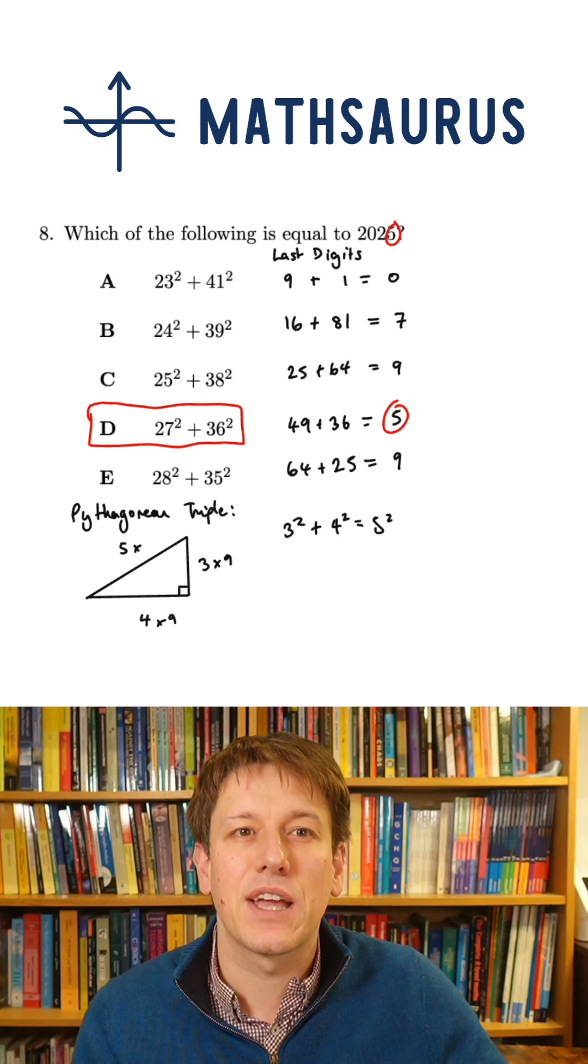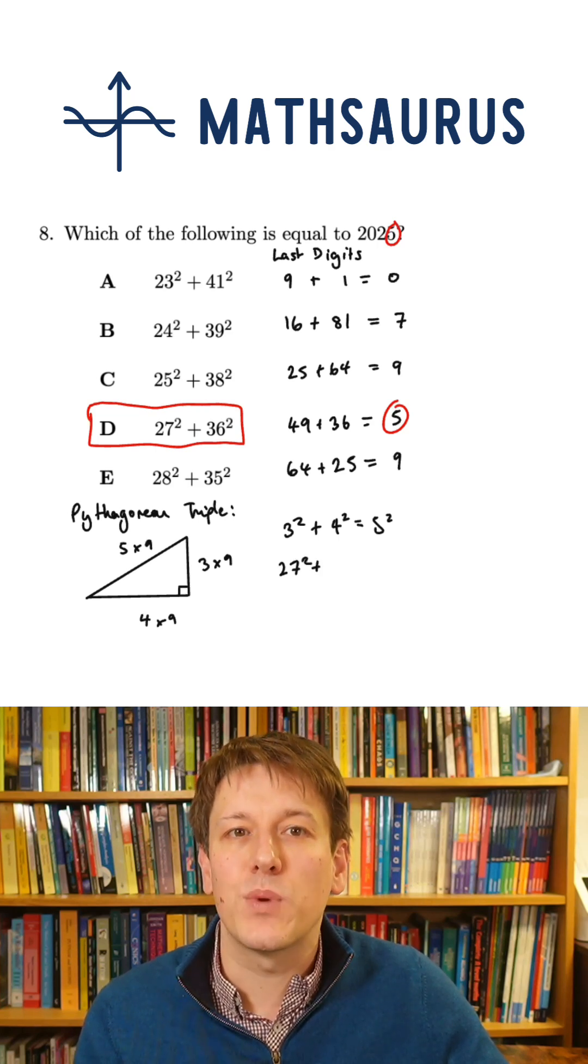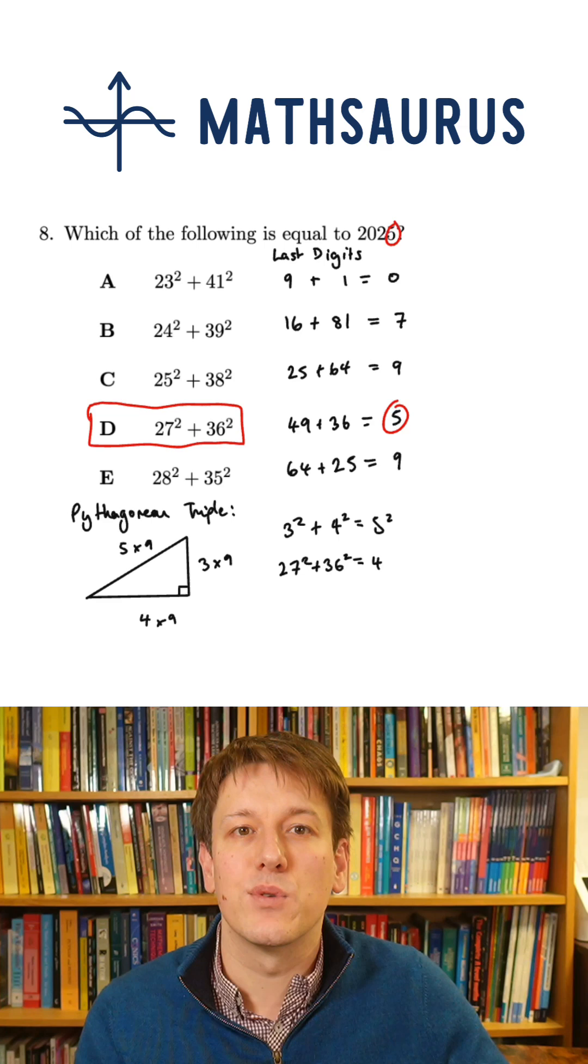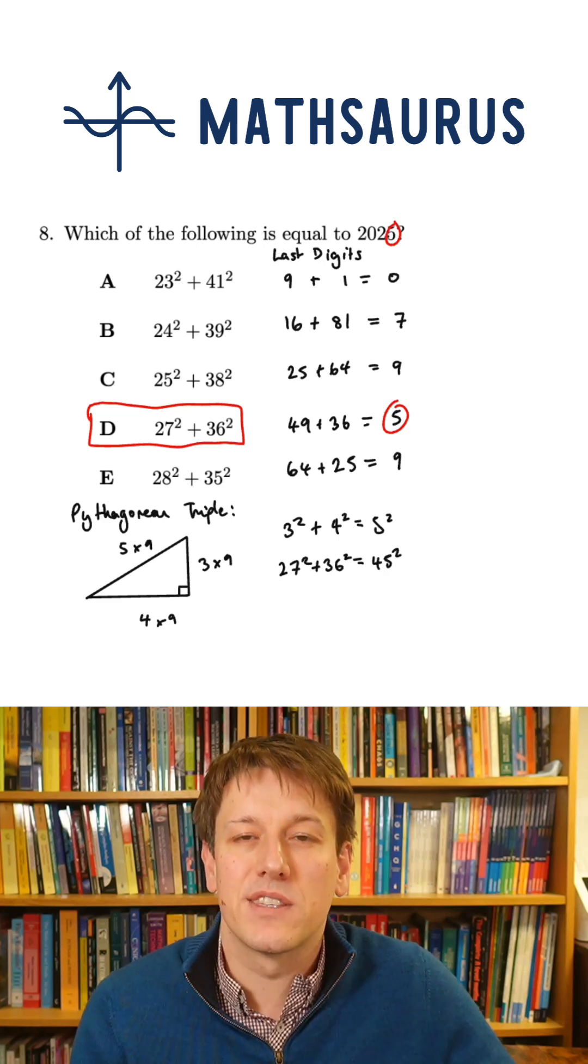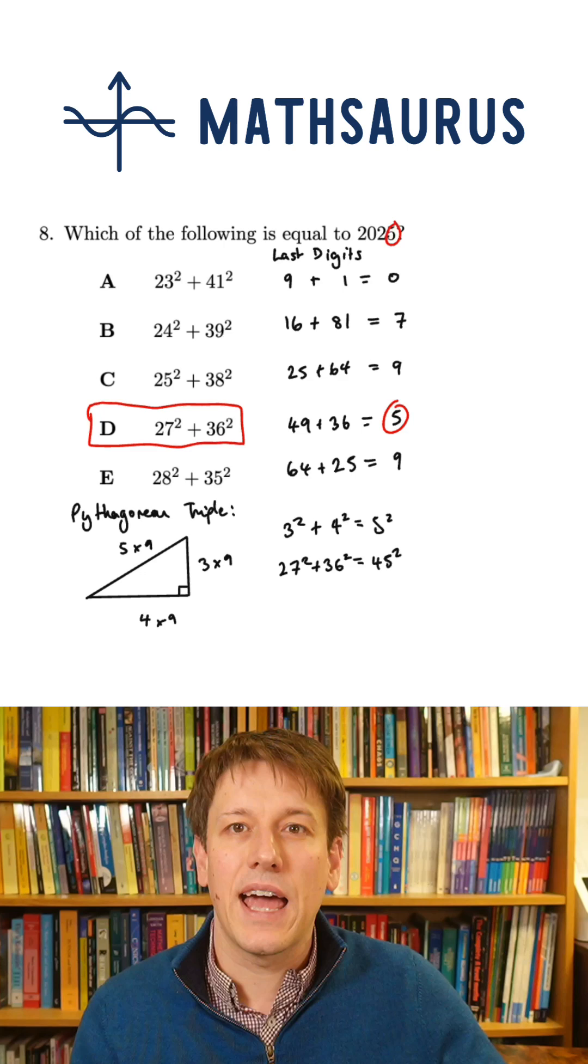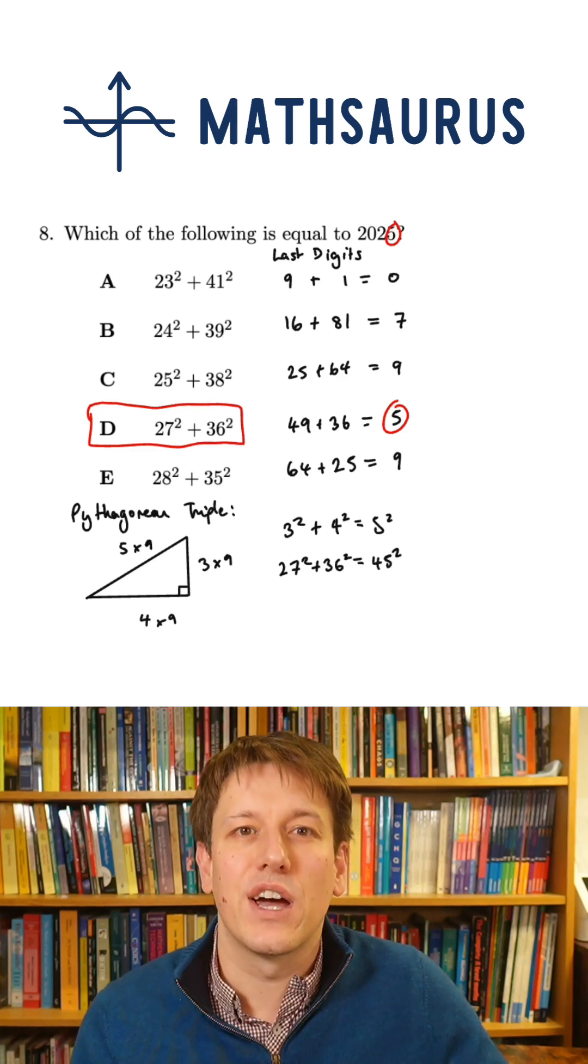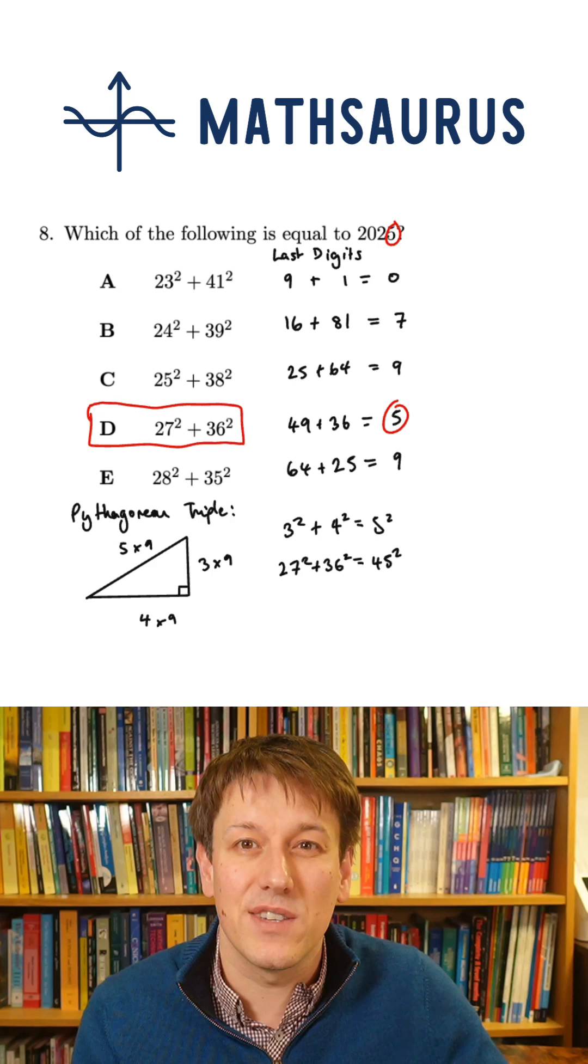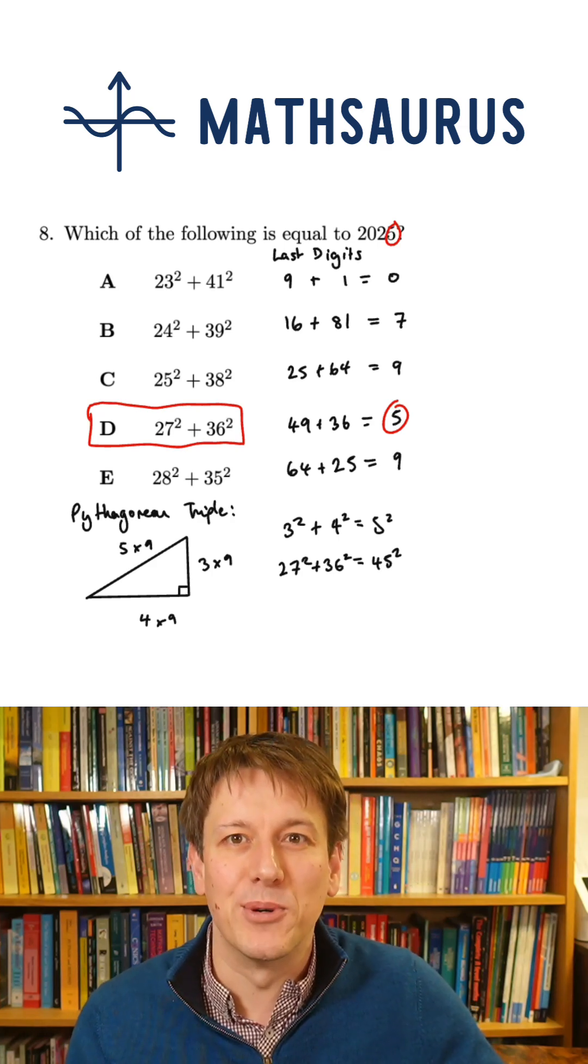So if I multiply the numbers by 9 here to get 3 times 9, 4 times 9, and 5 times 9, that would be 27, 36, and 45. And so that's another Pythagorean triple that says 27 squared plus 36 squared is 45 squared. And going into a maths challenge in 2025, we would want to know that 45 squared is 2025. And so we might just be able to spot that quickly if we are really on the ball.